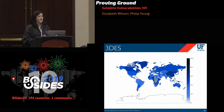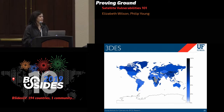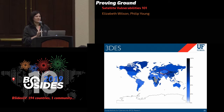We do see a typical pattern: countries that support a little DES-40, then a little more DES-56, and then a large amount of Triple DES support. That's probably to be expected — it was just deprecated last year. If we pulled this data in 15 years, hopefully this map would look more like the DES-56 map. Kazakhstan is an interesting exception: they actually support less Triple DES than DES-40.